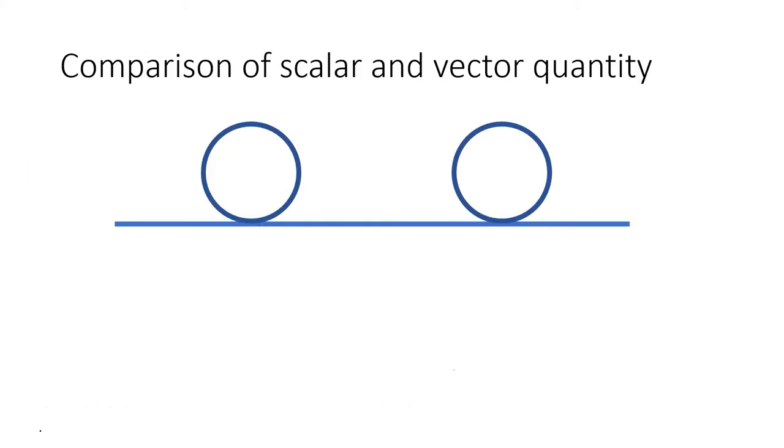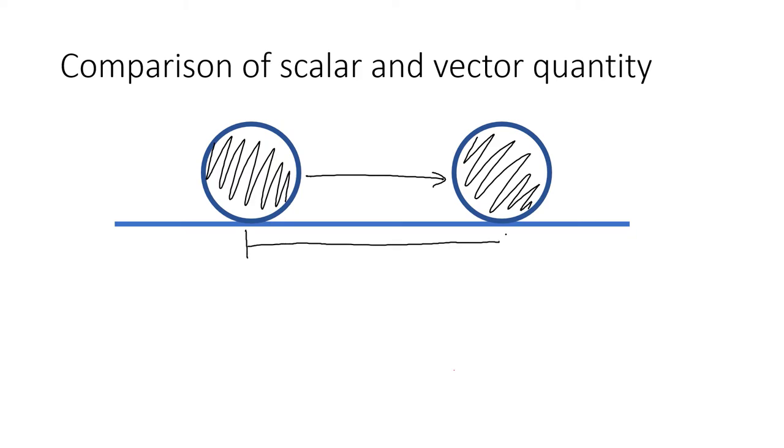In order to understand the difference between scalar and vector quantities, we can look at an example. Say that we have a ball that is on a surface and we push it over to the right. Let's say that we push it 5 meters. We can then look at the distance of how far this ball has traveled and that is a scalar quantity. And we can see that the ball has traveled 5 meters.